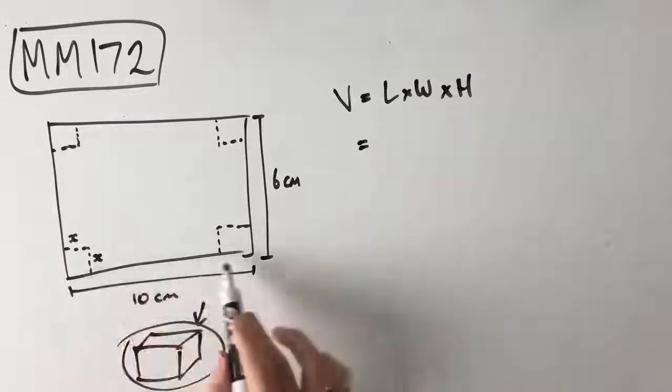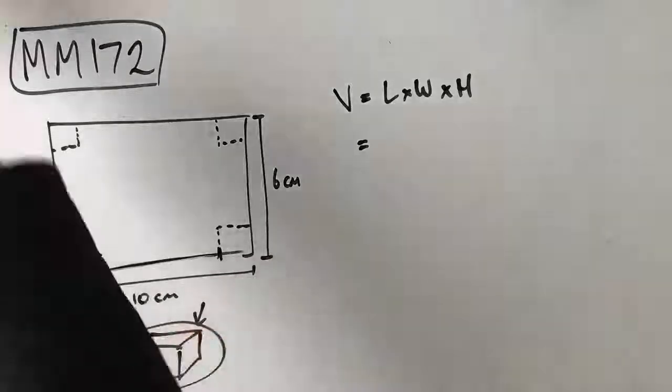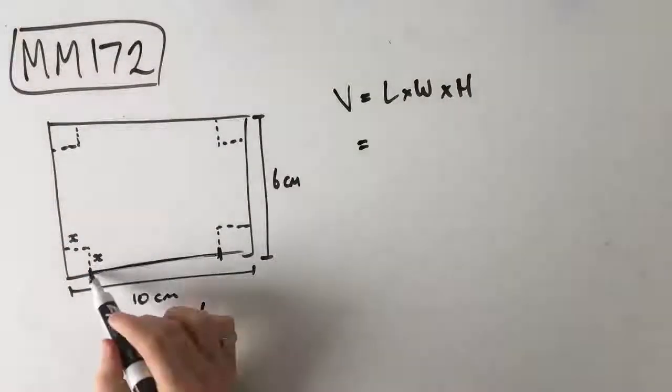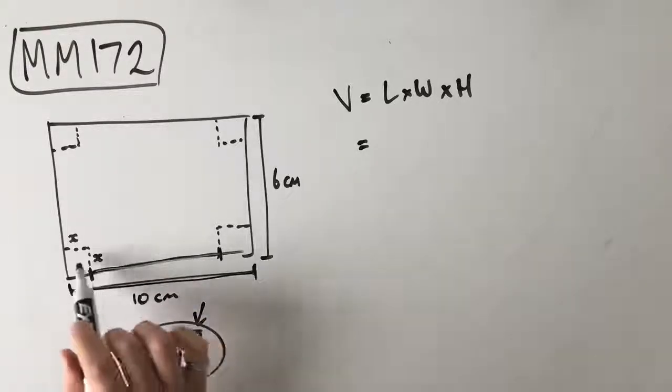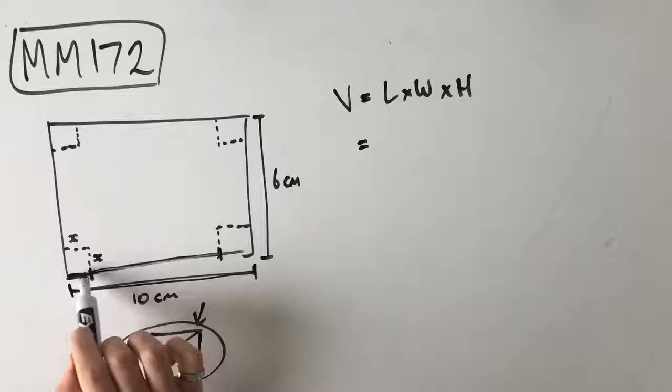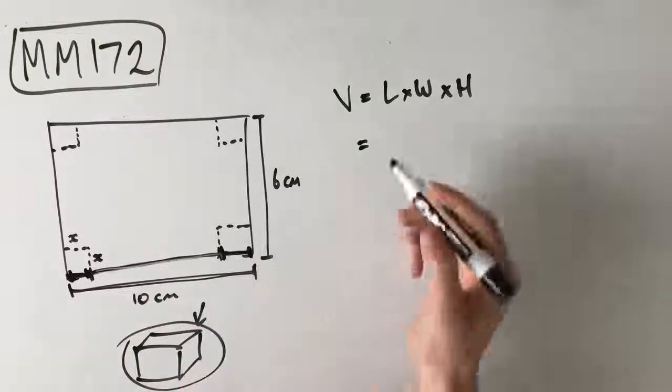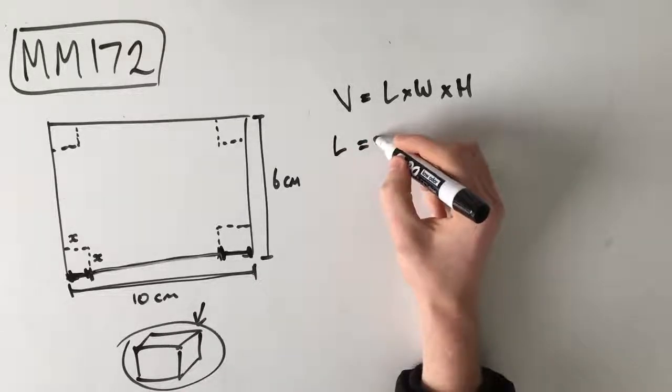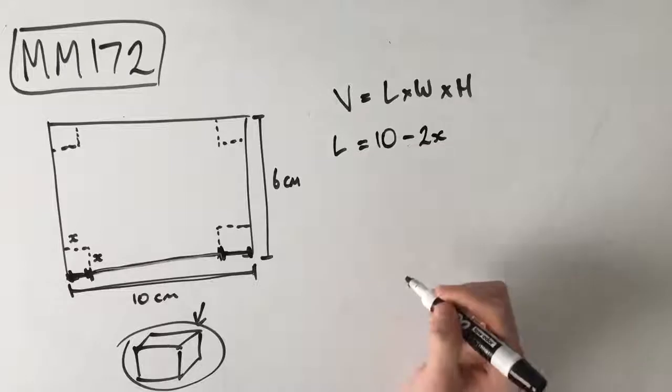So our length is not 10cm, because it's only from here to here. That's our length of our box, right? So this length here is equal to 10 minus x, because this square is side length x, minus an x over here as well, which means that our length is equal to 10 minus 2x.